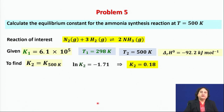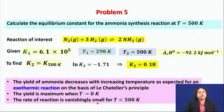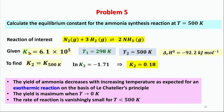Some interesting facts emerge from this comparison. At room temperature the yield was very high (K = 6.1 × 10⁵), but at 500 Kelvin the yield has gone substantially down (K = 0.18). Is this expected? Yes — the standard reaction enthalpy is negative, which is indicative of an exothermic reaction.